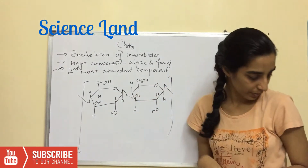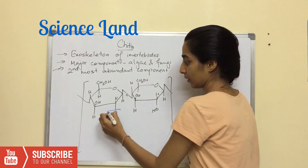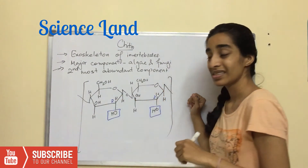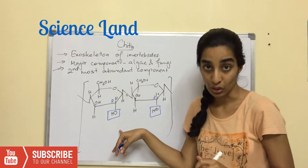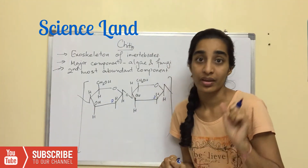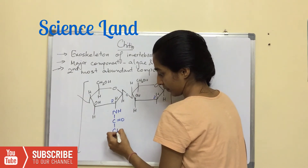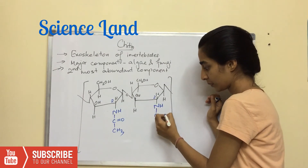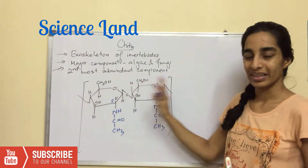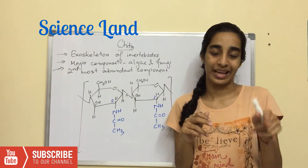This is cellulose — chitin is very similar to cellulose, except the C2 carbon, which has a hydroxyl group, is replaced by an acetylated amino group in both places.